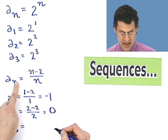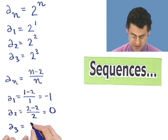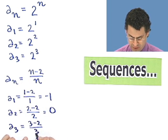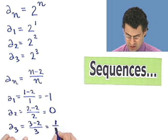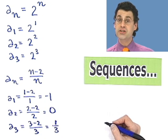Well, wherever I see an n, I'm now going to plug in 3. So I see 3 minus 2 over 3, which equals 1 third. And you can keep doing this.